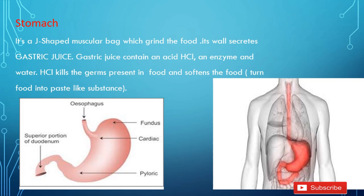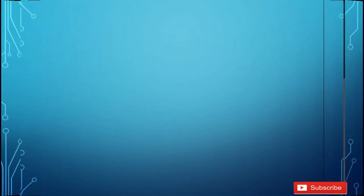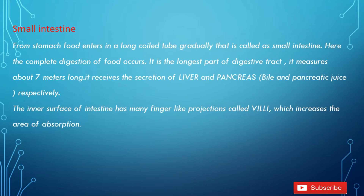The next one is Small Intestine. From the stomach, food enters a long coiled tube called the small intestine. Here the complete digestion of food occurs. It is the longest part of the digestive tract, measuring about 7 meters long. It receives the secretions of the liver and pancreas as bile and pancreatic juice respectively.